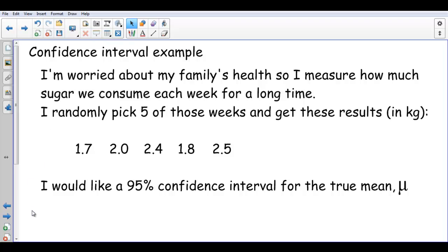So here's an example then. This isn't entirely true, but we'll pretend it is. So, family's health, I measure how much sugar we consume each week. For all of us, there's four of us. If I randomly pick five of those weeks, I get this result in kilograms of sugar. I've tried to include both added and sugar that's inherent in fruit and other things. Those are my five samples there. And I want a 95% confidence interval for the true mean of how much sugar we're consuming per week.